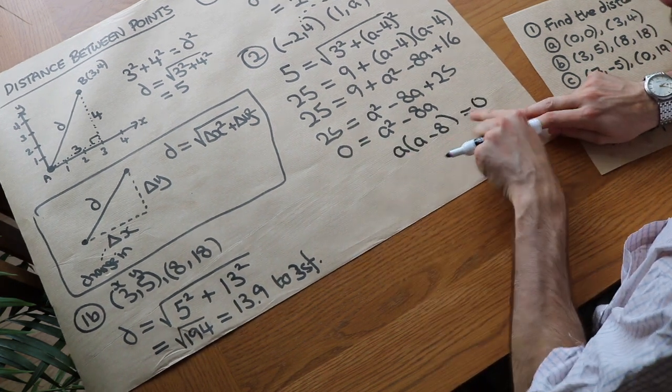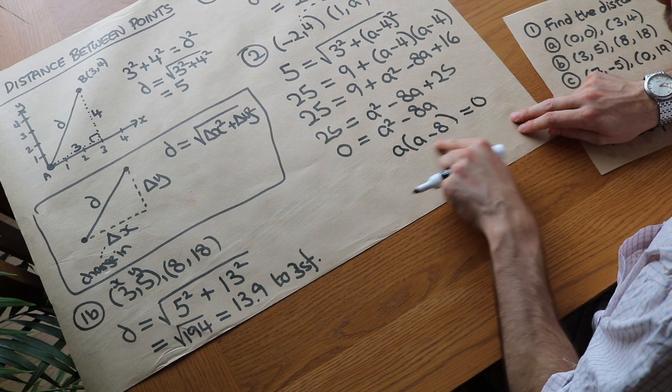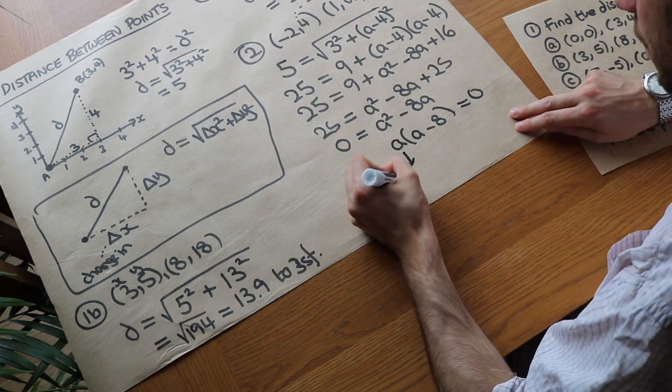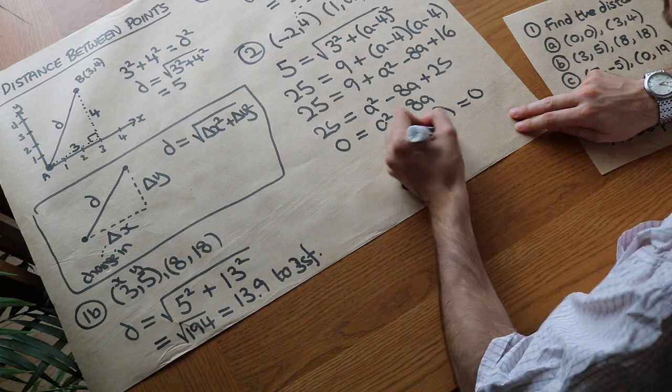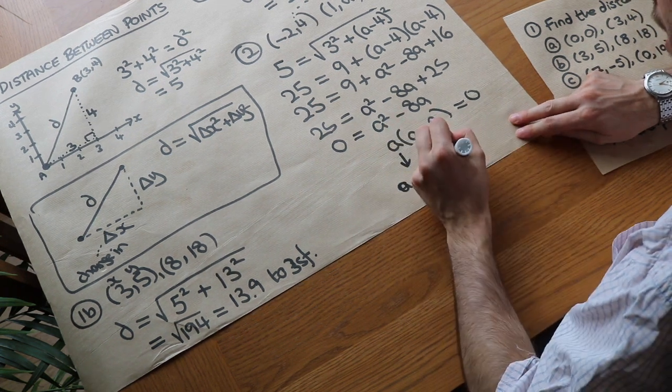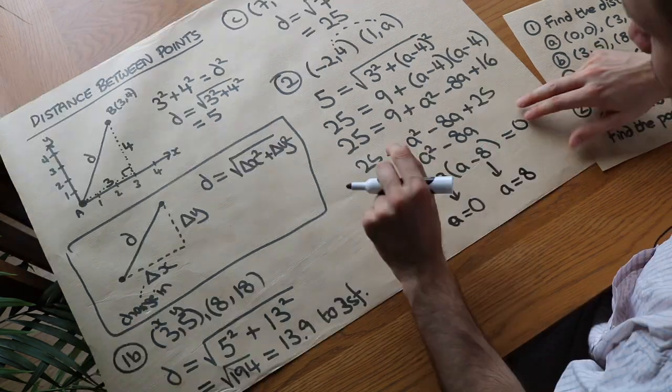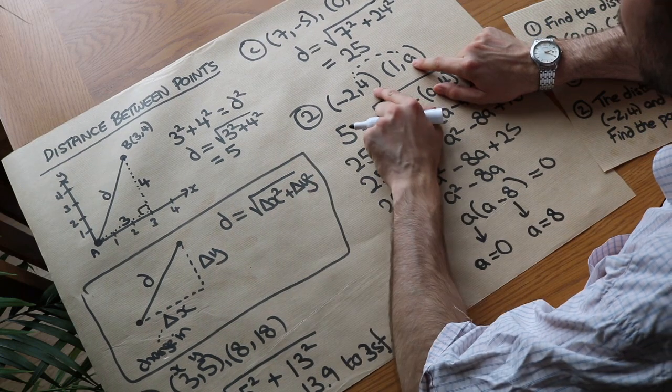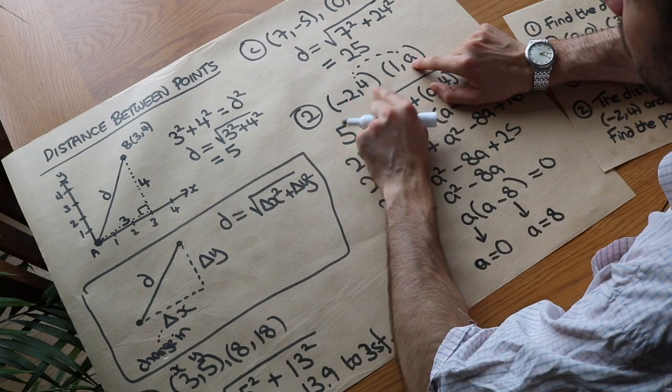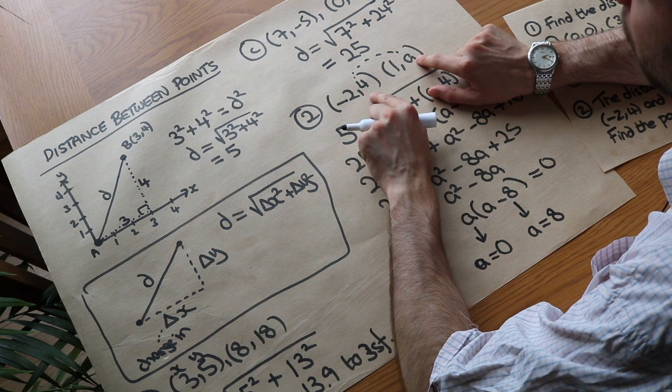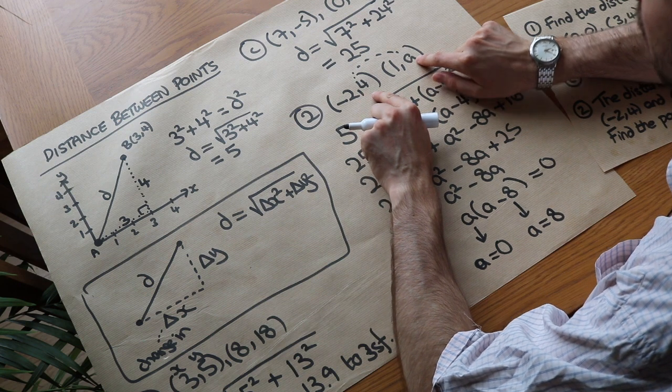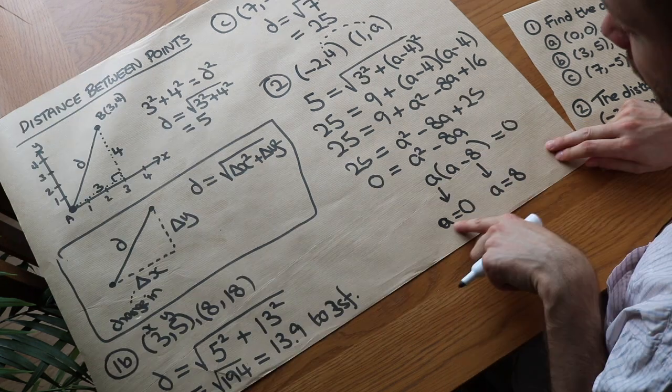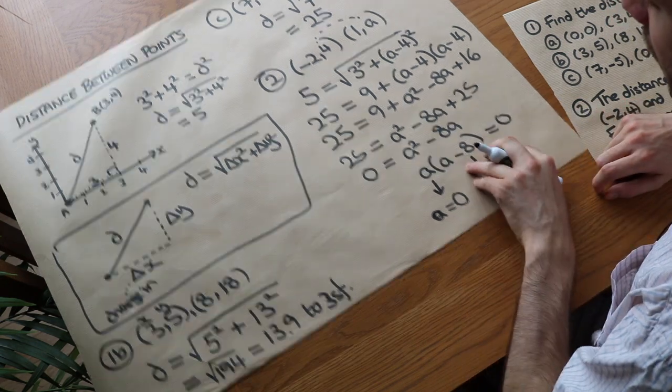And do you remember, when we have the product of two things is zero, it means one or both is zero. So if the first thing is zero, then we've just got a equals zero. And in the second case, we've got where a minus 8 is zero, then a would be equal to 8. And that does work. If you had a, for example, was 8, then you've got the change in x is 3, the change in y, 4 to 8 is 4, 3 squared plus 4 squared is 25 square root, that is 5, which does give us the correct distance. And the same would apply with zero as well. That's definitely a valid solution.